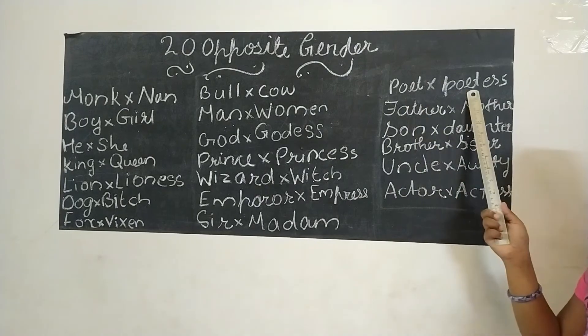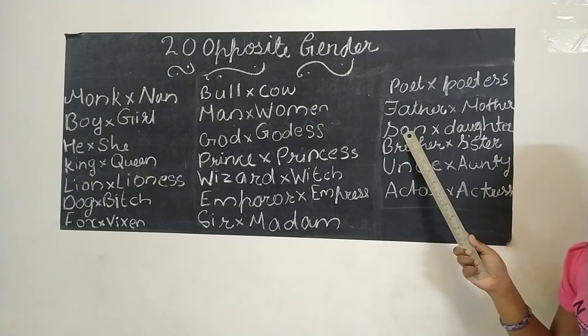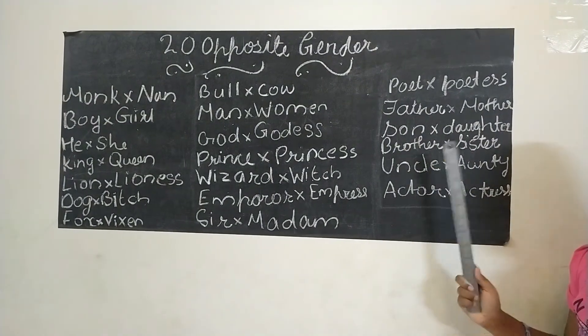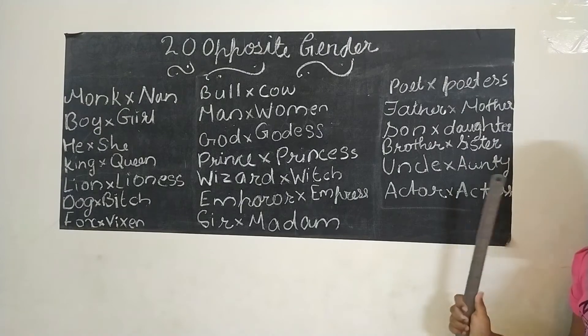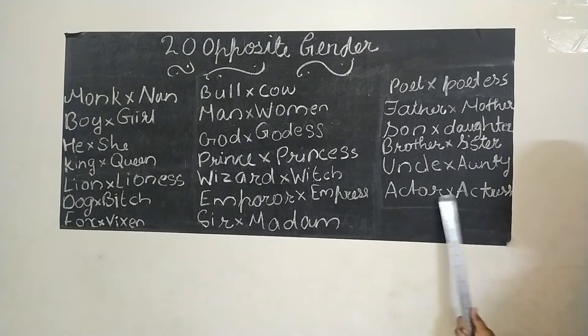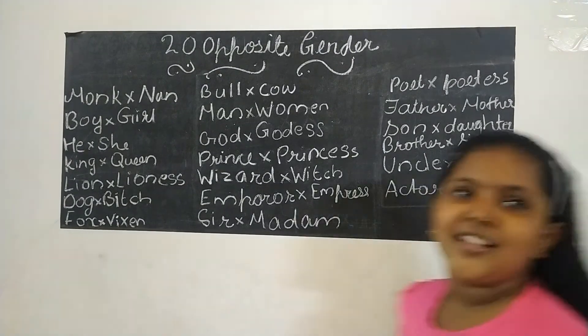Poet, poetess. Father, mother. Son, daughter. Brother, sister. Uncle, aunt. Actor, actress.